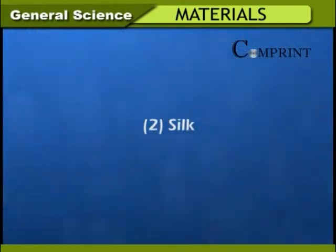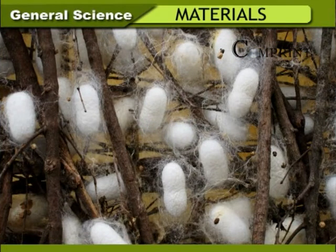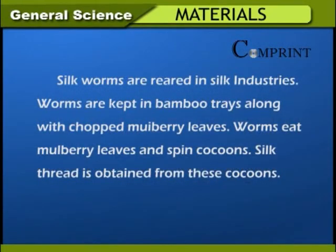Silk: We wear silk clothes on special days like festivals and functions. Silk is obtained from the cocoons of the silk moth. Silkworms are reared in silk industries. Worms are kept in bamboo trays along with chopped mulberry leaves. The worms eat mulberry leaves and spin cocoons. Silk thread is obtained from these cocoons.